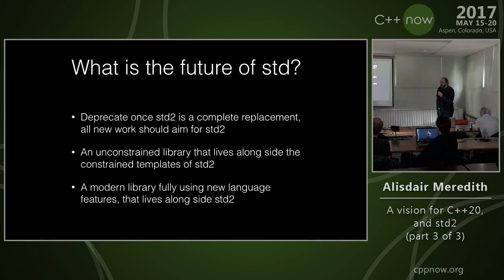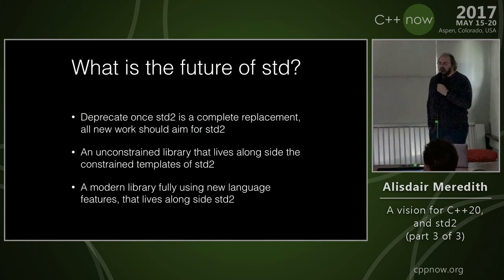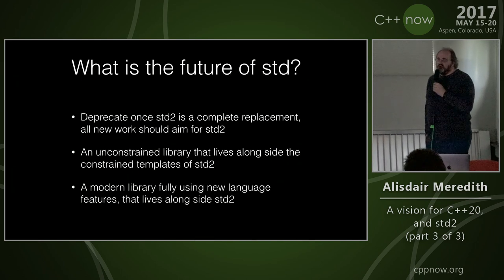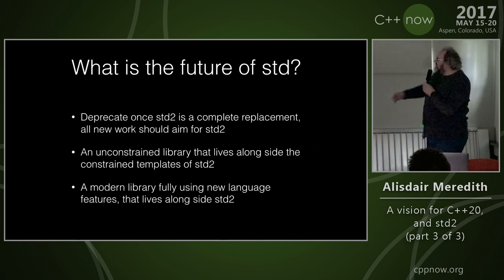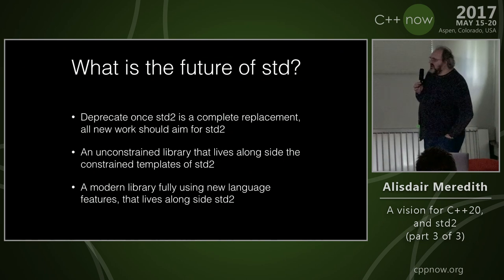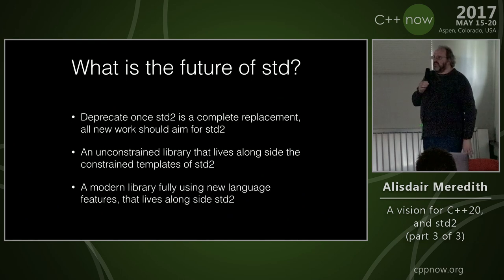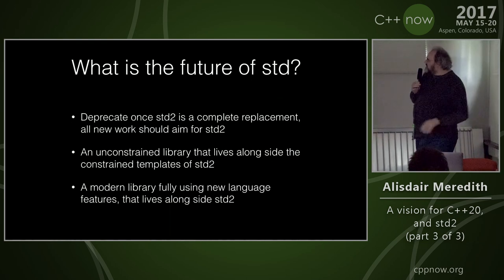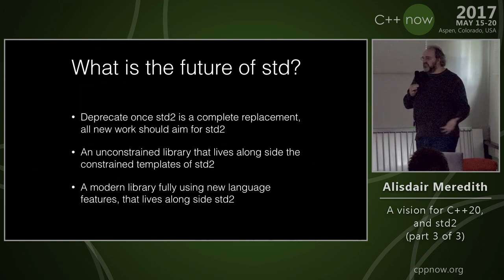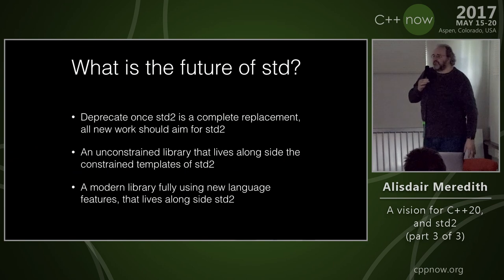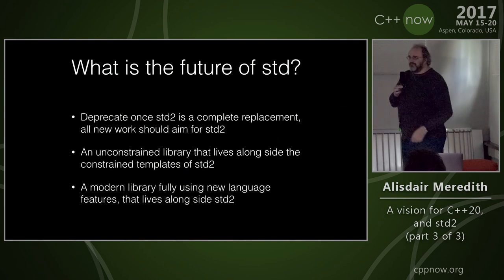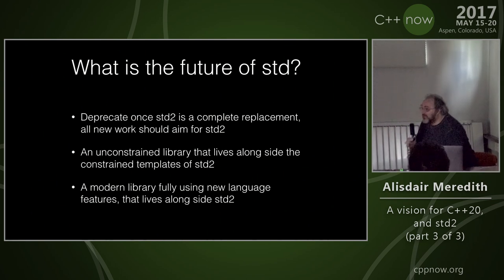Moving to the next topic: what is the future of std if we're doing radical new stuff in std2? Do we see this continuing in parallel into the future, or an eventual total migration so that std2 is just the way to do things? An implicit assumption here is that if we're doing std2 for the new stuff, std2 is concepts from day one, and because std doesn't have concepts today, it continues on in that vein.